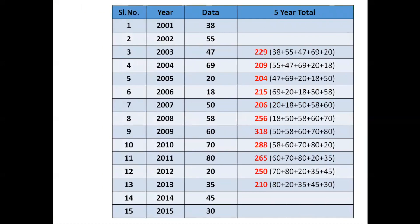Let us see how to calculate the five-year total. As we are dealing with five years, you have to add the first five entries in the data. That means you add 38 + 55 + 47 + 69 + 20, which makes 229. This total is written in the middle row of those five years, which corresponds to 2003, so we write 229 in front of 2003.